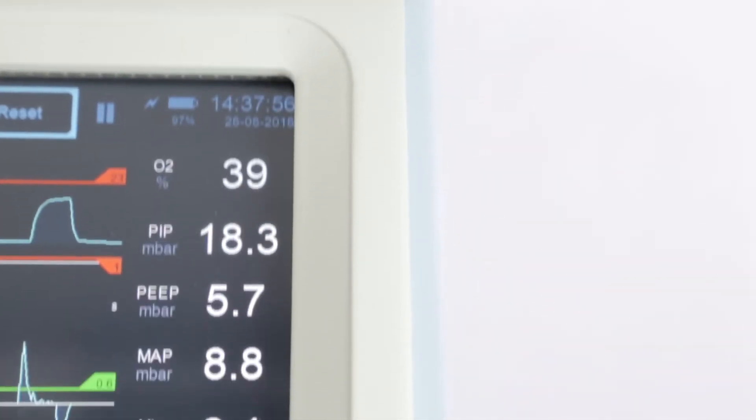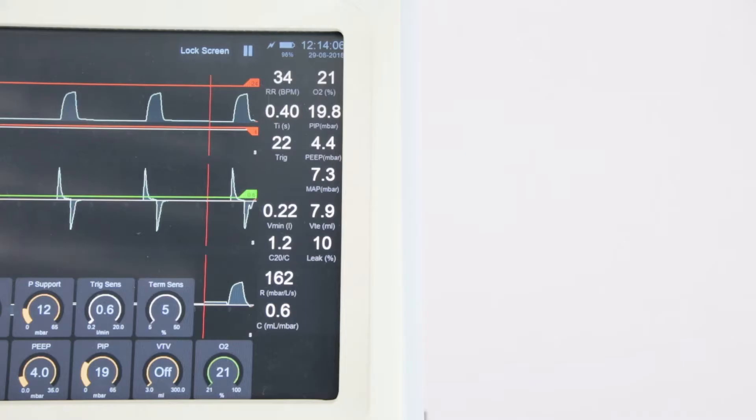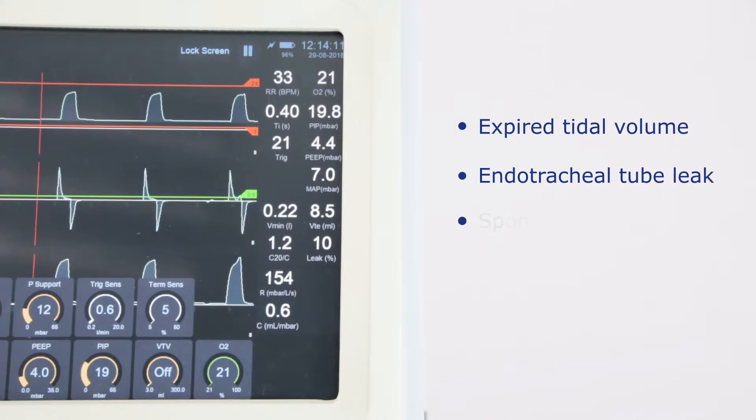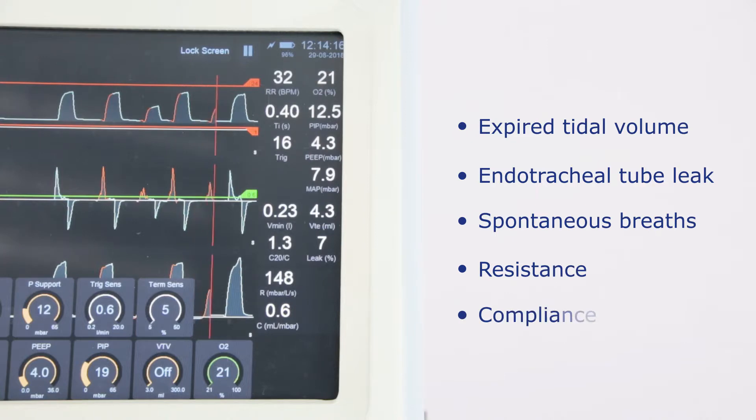Then look in the monitoring column and observe the measured pressures, the expired tidal volume value, any endotracheal tube leak, if there are any spontaneous breaths more than the set breaths, and any changes in resistance and compliance.